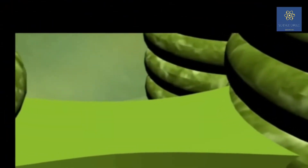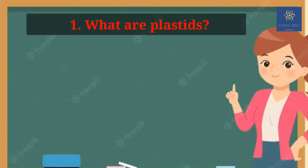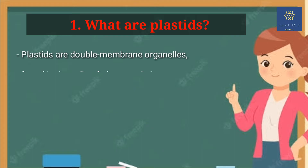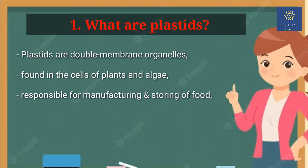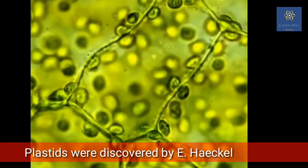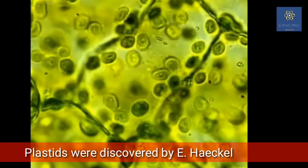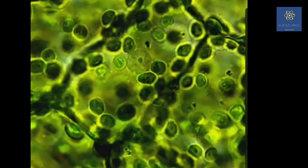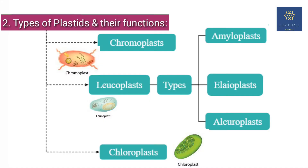Let's see what is the definition of plastid. Plastids are double membrane organelles that are found in the cells of plants and algae. Plastids are generally responsible for manufacturing and storing of food. These often contain the pigments that are used in photosynthesis and different types of pigments that can change the color of the cell. Plastids are generally bigger in size so they can be easily seen under a microscope. The plastids were first discovered by E. Haeckel.